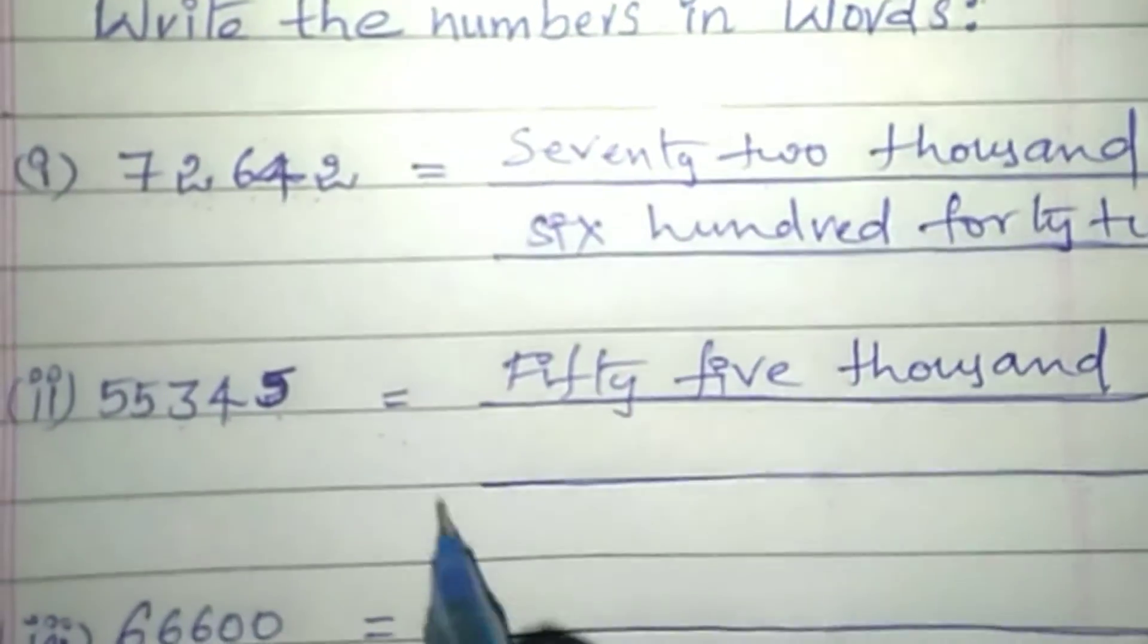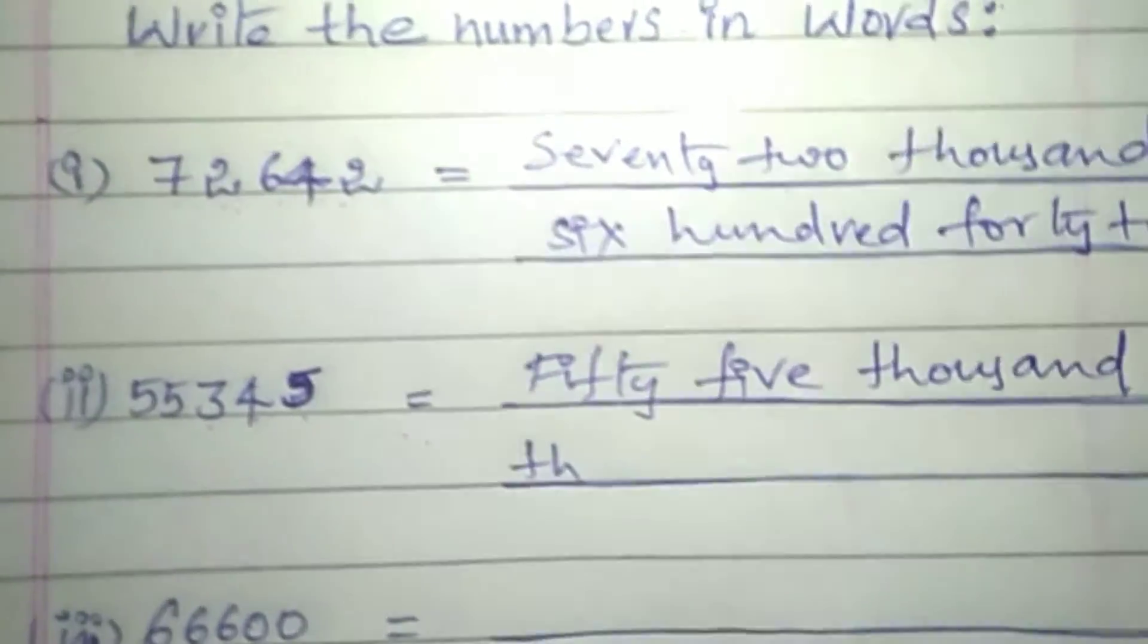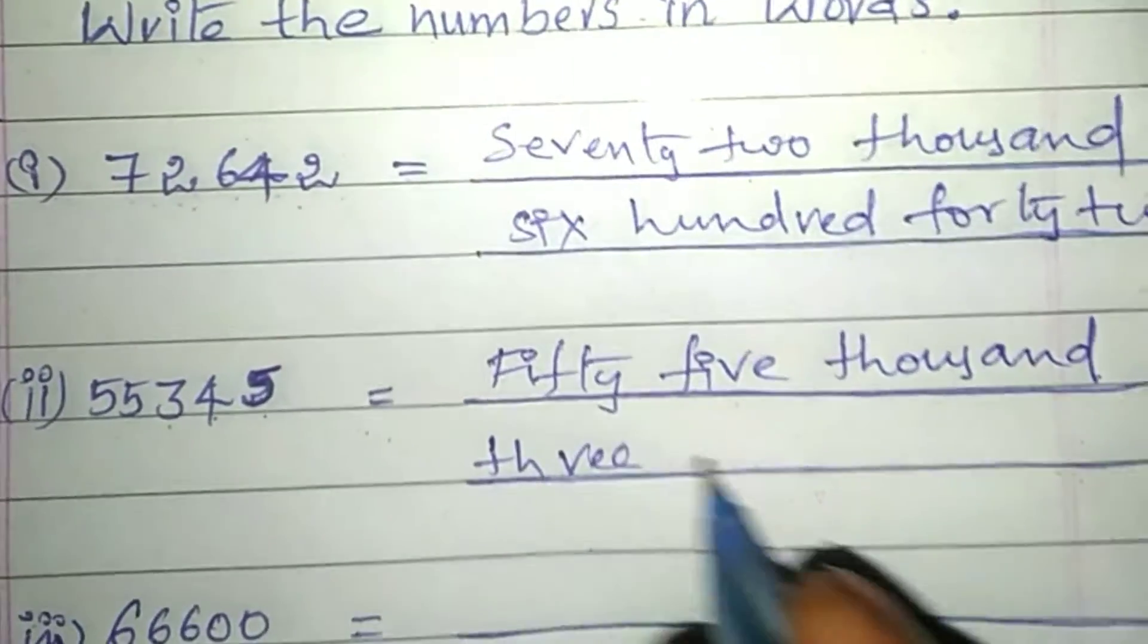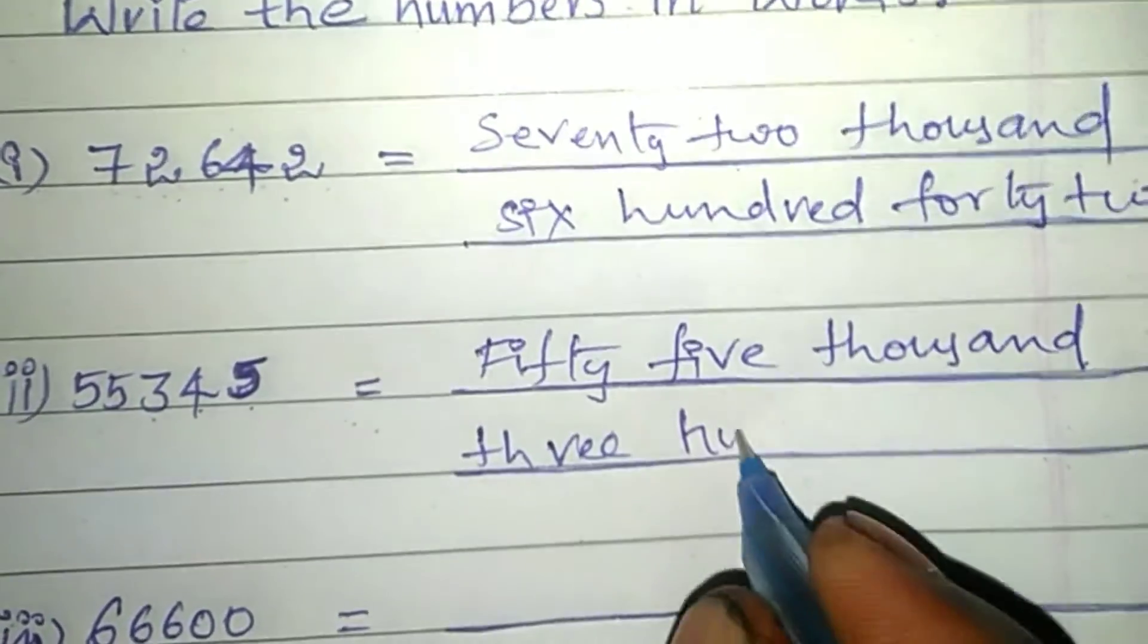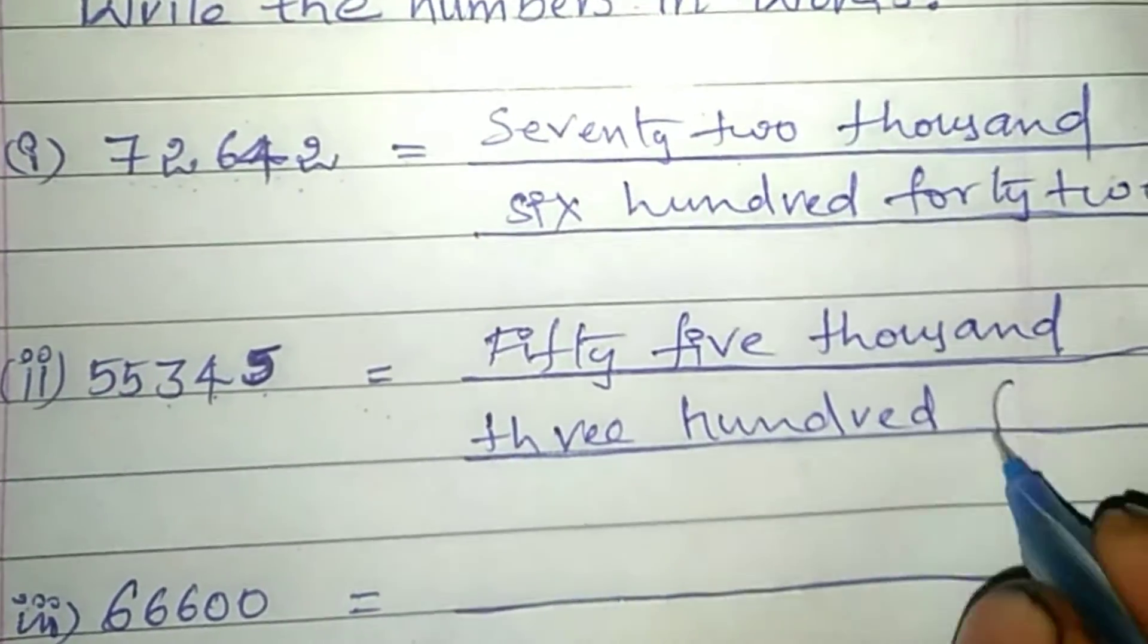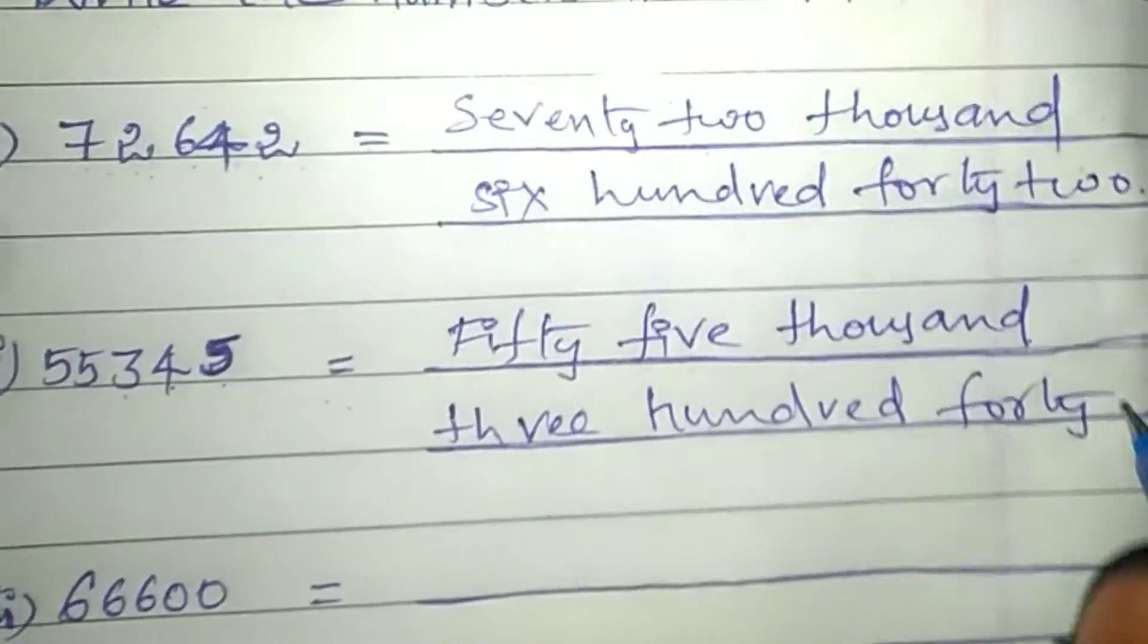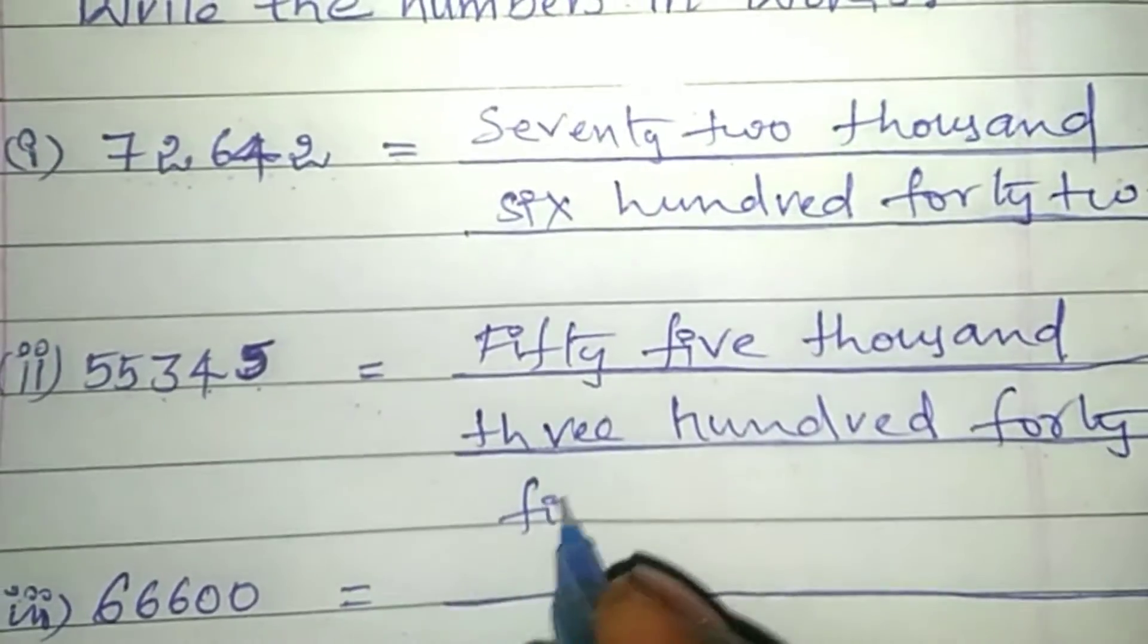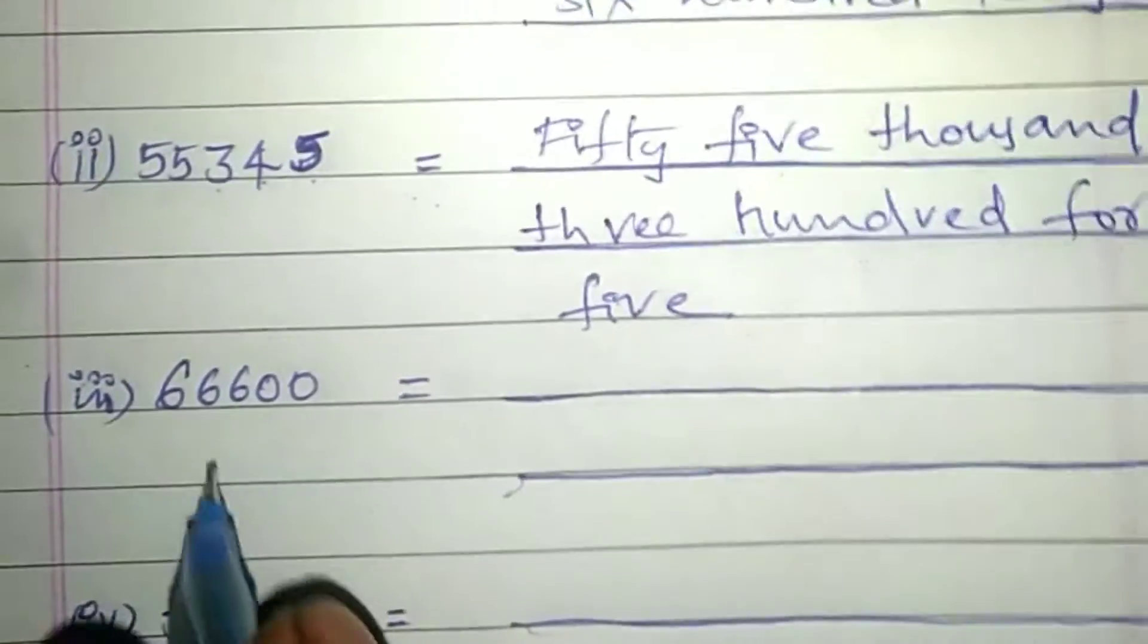Fifty-five thousand, three hundred forty-five. That's fifty-five thousand, three hundred forty-five. Next one: 66,600.